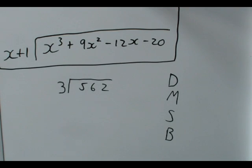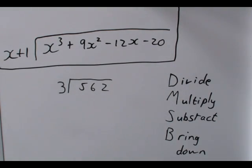Now, let's divide 3 into 562. We're going to use the long division rules, which are Daddy, Mommy, Sister, Brother, which is just the easy way to remember it, which stands for divide, multiply, subtract, and bring down.